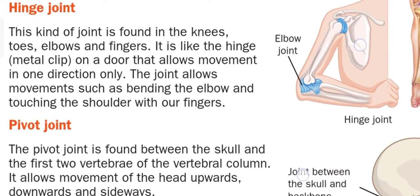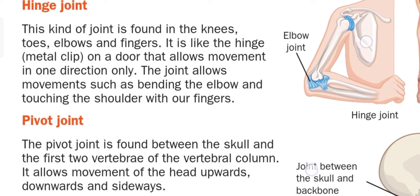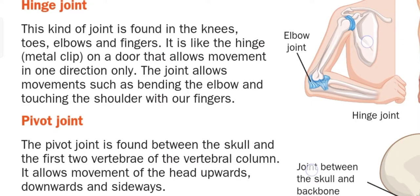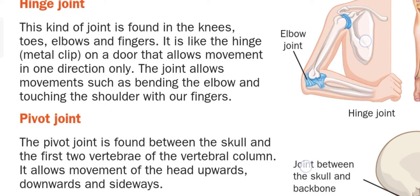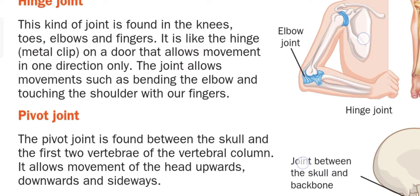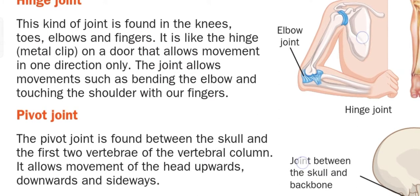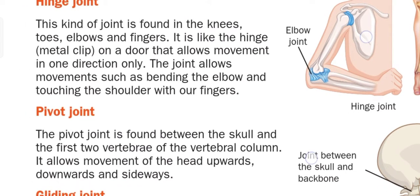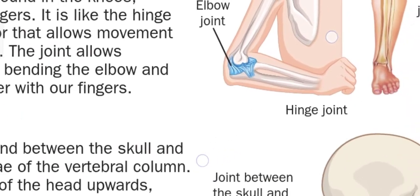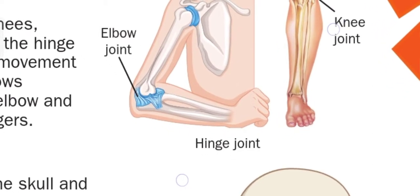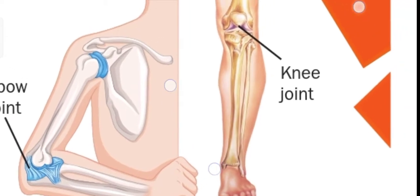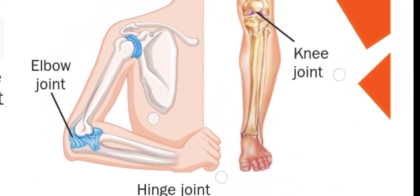Then we have the hinge joint. This kind of joint is found in knees, toes, elbows, and fingers. It is like a hinge or metal clip on a door that allows movement in one direction only. This joint allows movements such as bending the elbow and touching the shoulder with our fingers. The elbow joint and knee joint are examples of hinge joints.